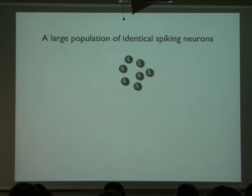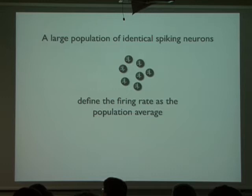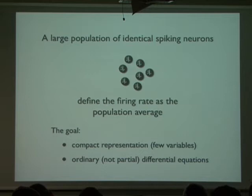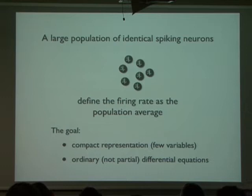To get started, let's consider a large population of identical spiking neurons, and define the firing rate as just the population average over all these neurons. Our goal is twofold: first, a compact representation — loosely defined as few variables, which will become clearer later — and second, we'd like our firing rate description to be composed of ordinary differential equations as opposed to partial differential equations.